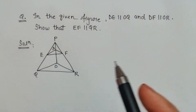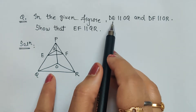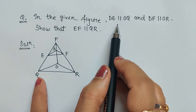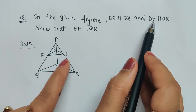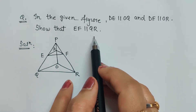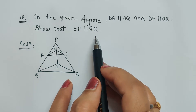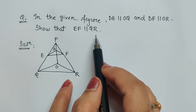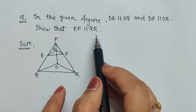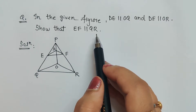Hello friends. In this question we see a figure and we have been given that DE is parallel to OQ and DF is parallel to OR. We have to show that EF is parallel to QR. This video and the previous two videos are based on examples of basic proportionality theorem and converse of basic proportionality theorem — BPT and converse of BPT.